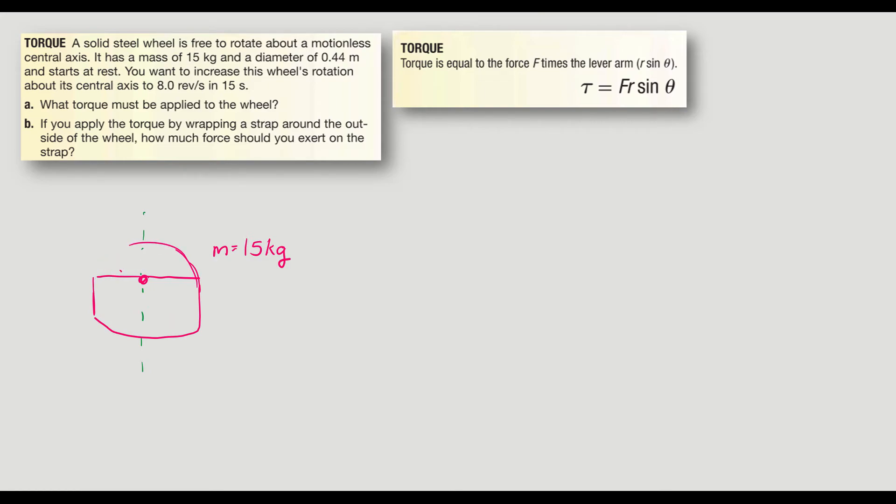A diameter of 0.44 meters. Let's just write the radius because we almost always use radius. So 0.22 meters for the radius. It starts at rest. And then you want to spin this. You want to apply torque on this somehow to increase the wheel's rotation from 8 revolutions per second, or from 0 to 8 revolutions per second.